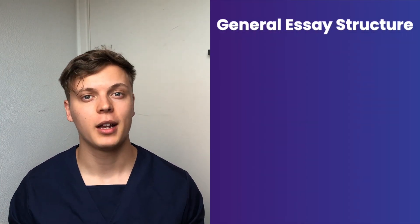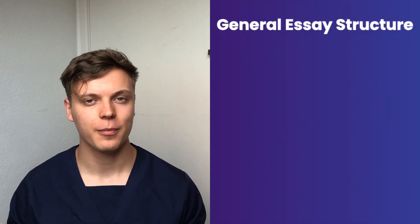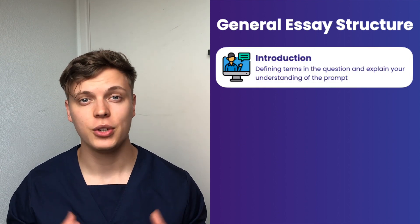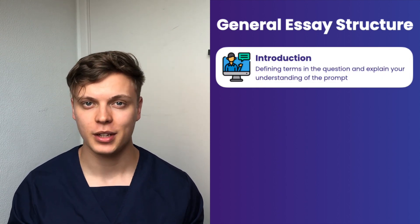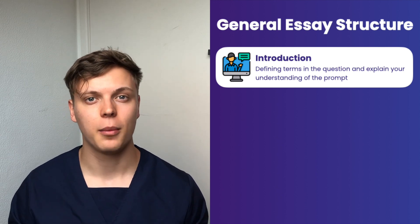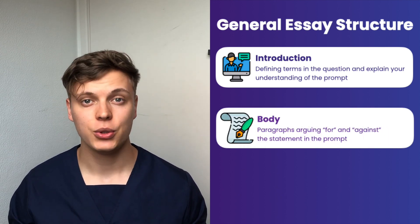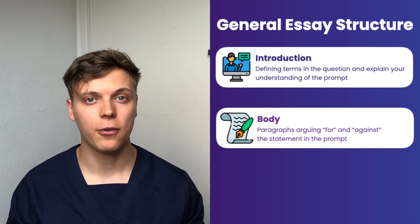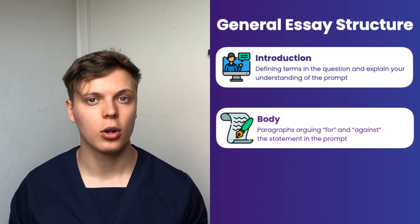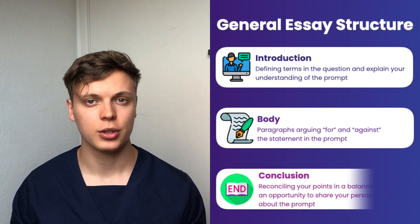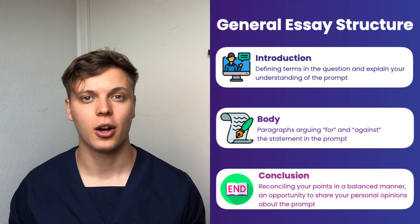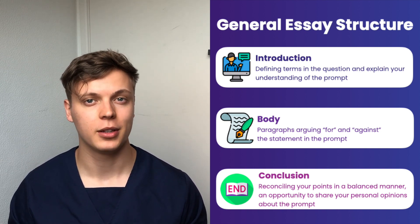A general structure you might like to use in BMAT Section 3 is to start off with a general introduction in which you define what is meant by the question as well as the specific terms within it. You can then follow this up with two big paragraphs in which you argue both for and against the statement. Finally, you round it off with a conclusion which is relatively balanced but also compelling, giving you a chance to offer your own opinion briefly.